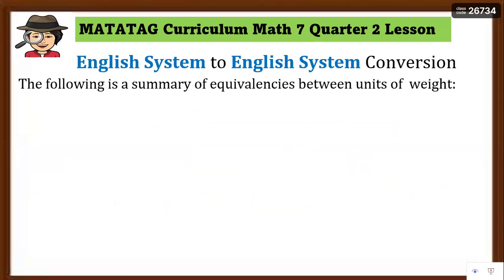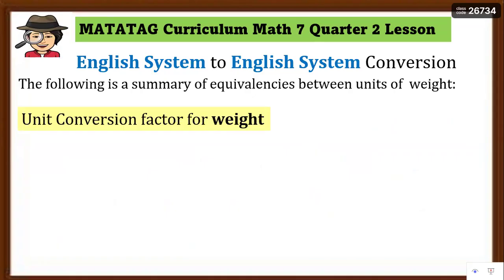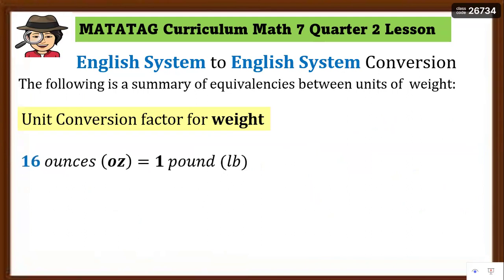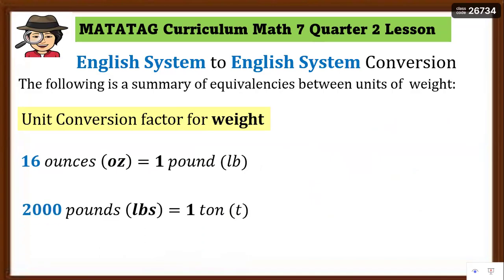Now we are going to discuss the English system conversion. We need to recall the summary of equivalences between units of weight. For the unit conversion factor for weight: 16 ounces (oz) is equivalent to 1 pound (lb, singular), and 2,000 pounds (lbs, plural) is equal to 1 ton.